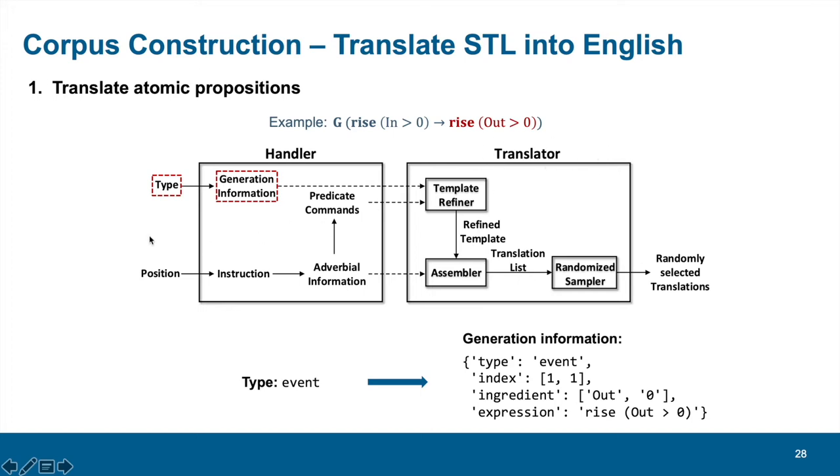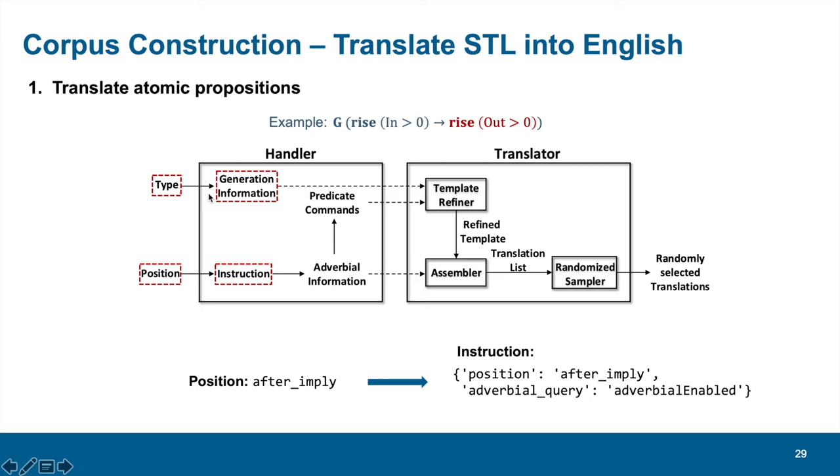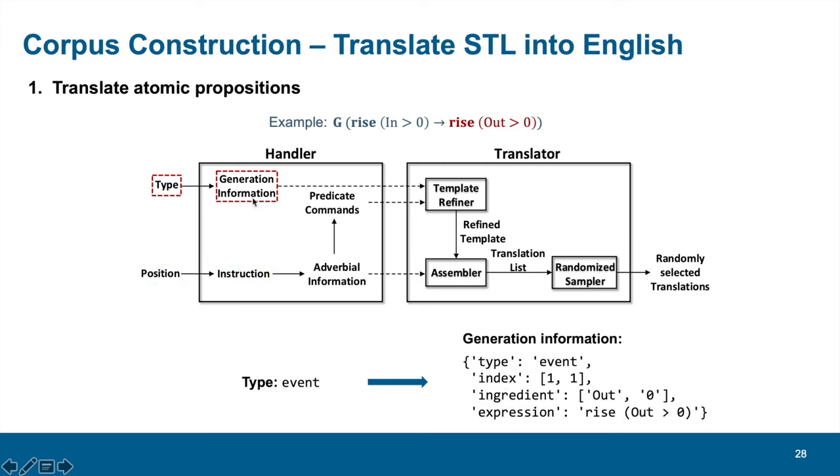There are two pipelines in the handler. In the upper part, the first pipeline will randomly generate an STL fragment as described before. It receives the type of syntactical component as the instruction. Here it is an event representing a rising edge. Then all the information of the generated postcondition is stored in a Python dictionary called generation information.